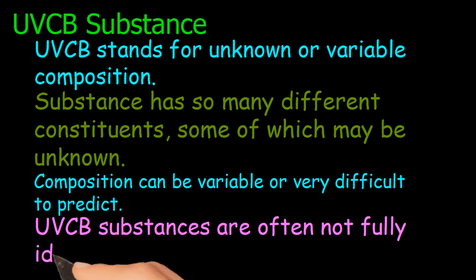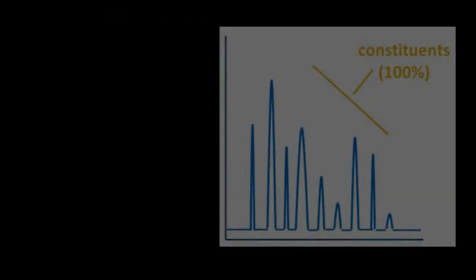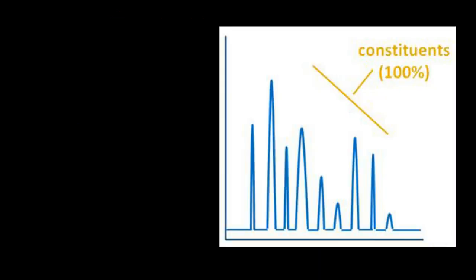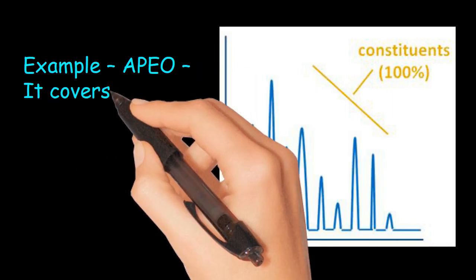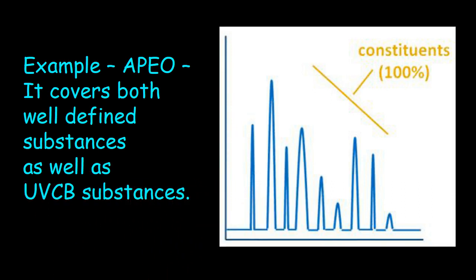UVCB substances are often not fully identifiable. Here you can see so many constituents are present in substance. Example: APEO. It covers both well-defined substances as well as UVCB substances.